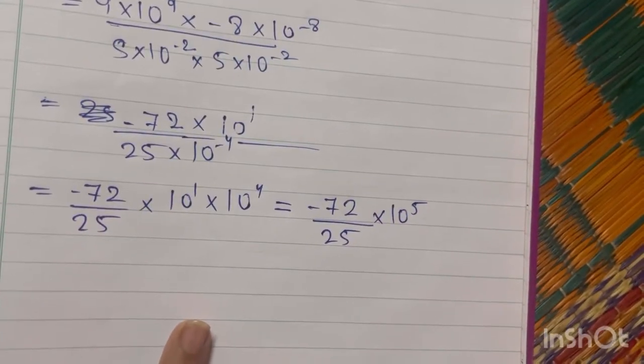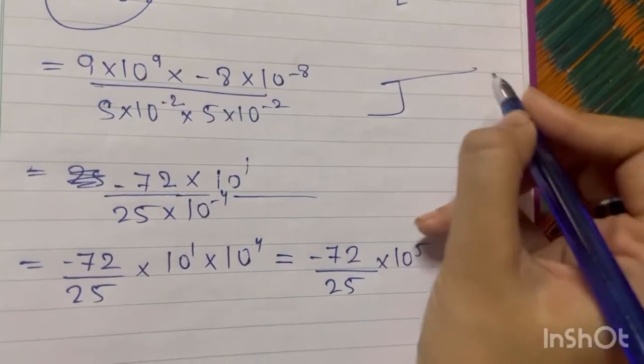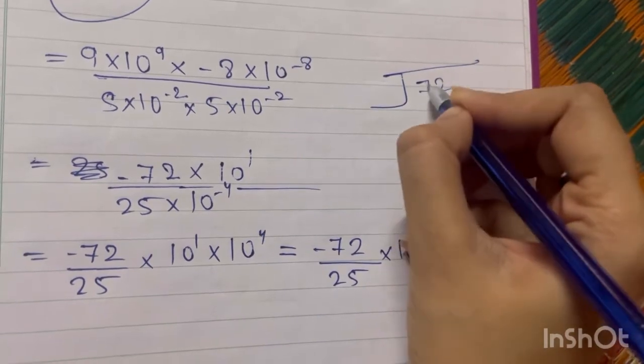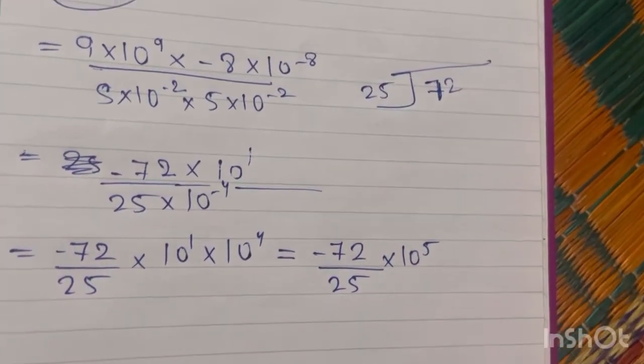Now, if you want, you can go with log calculation or else you can go with normal division. Here I will prefer normal division. I am dividing 72 by 25, as we are all familiar with the table of 25.